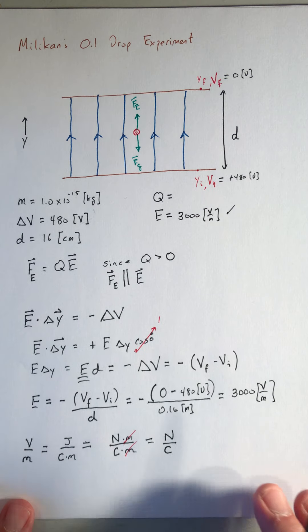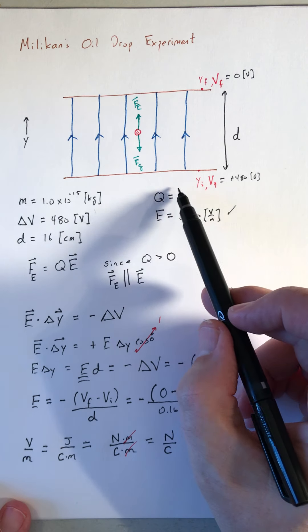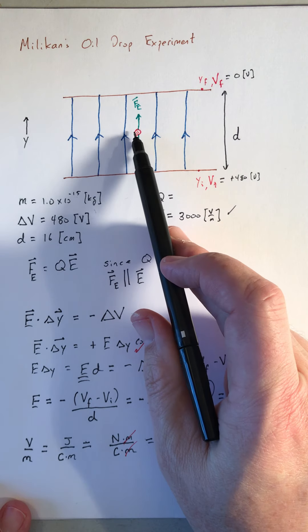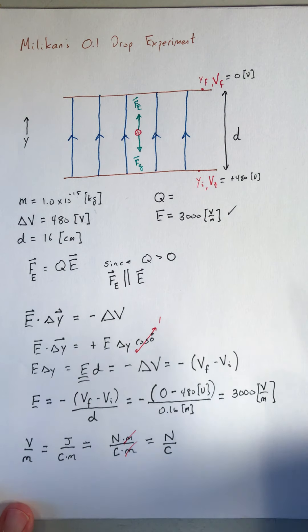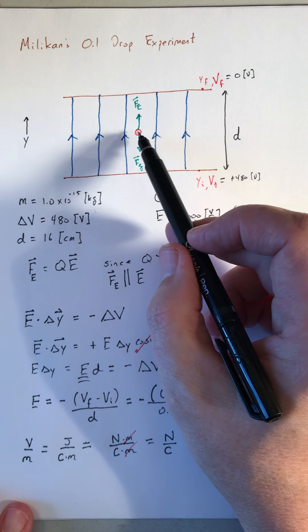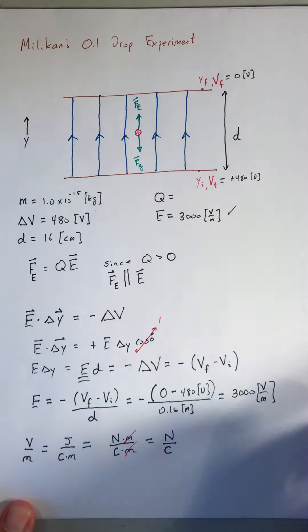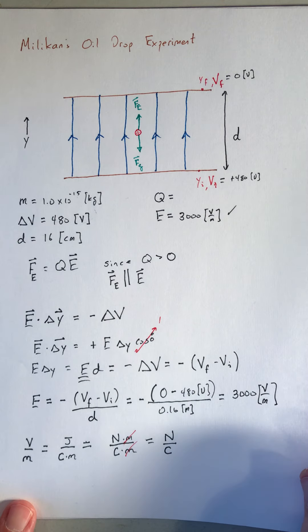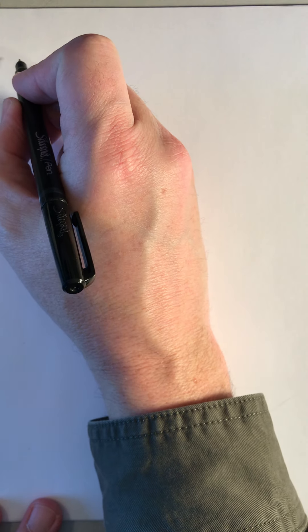All right, so now we're going to go back and try to figure out how much charge is on our little oil drop. And we're going to solve for that by the condition that this oil drop is in equilibrium, so that the sum of the forces is zero. So for equilibrium, I add up all of the y components of forces and those sum to zero.